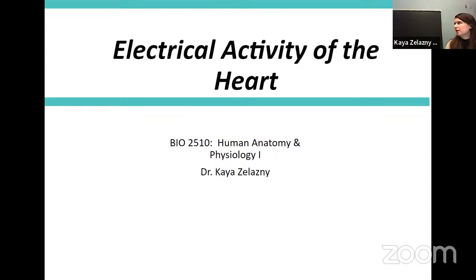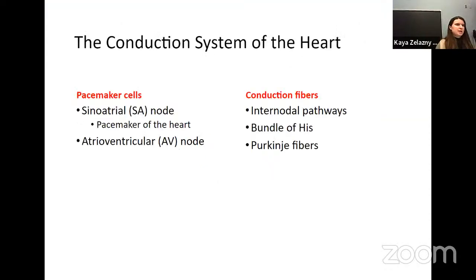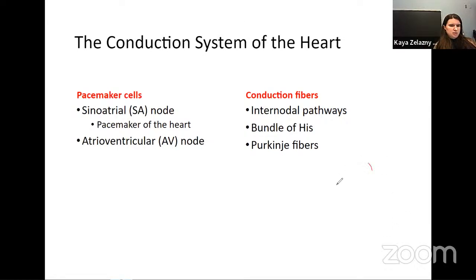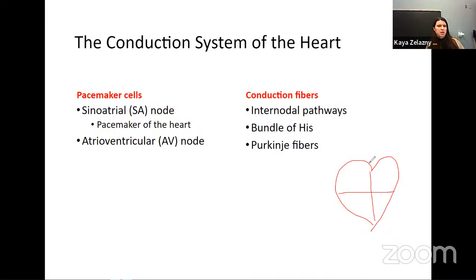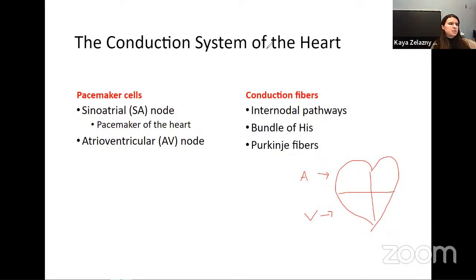So, electrical activity. We're talking about cells with electrical potential in the heart, which we know is cardiac muscle. We have our pacemaker cells and our conduction fibers. We're trying to make our heart squeeze in a specific order — squeezing the atria at the top first, then the ventricles to send blood to the lungs and to the body. That's why we need this whole conduction system, to make sure things happen in that order. The location of the cells in our electrical pathways are going to match that order.